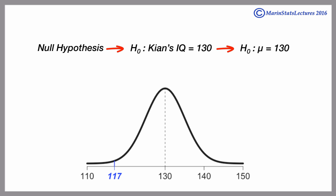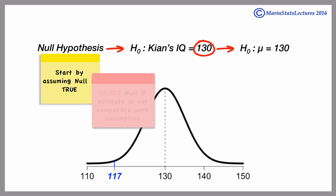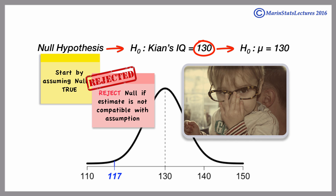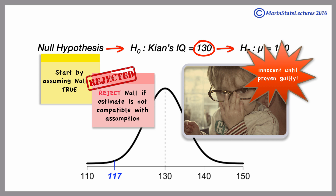The null hypothesis assumes that the true value is equal to some number. The key is that we start by assuming that our null hypothesis is true, and we will only reject this in favor of the alternative if our estimate is not very compatible with this assumption. We can never prove a null. The null is innocent until proven guilty.